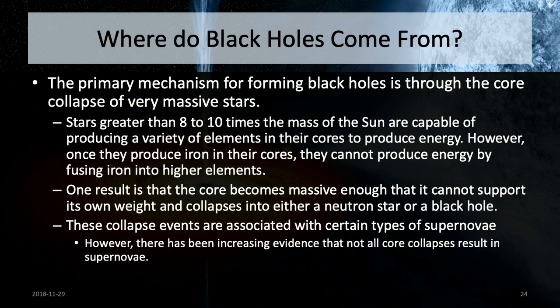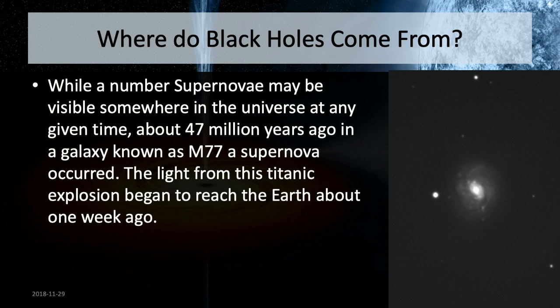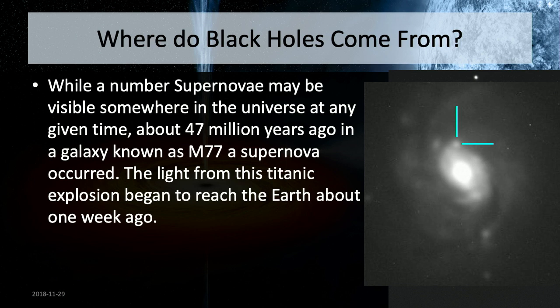This collapse is typically associated with type 2 supernovae. There's been increasing evidence that not every core collapse results in a supernova — which might explain why Cygnus X1, at 15 times the mass of the sun, actually didn't explode dramatically, partly explaining why there would be a star so close to it. We can find black holes forming through supernovae by looking around — there's often somewhere in the universe we can see a supernova. Recently, meaning about 47 million years ago, a star exploded in galaxy M77, and light from it began to reach Earth just one week ago.